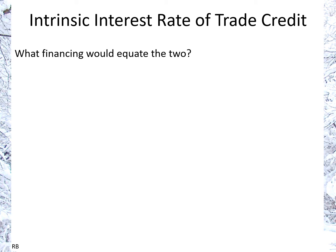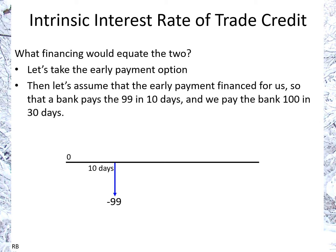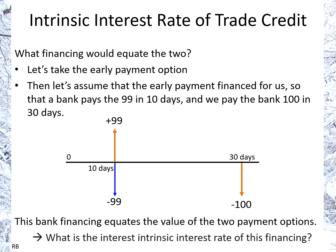Which financing would equate the two options in terms of value? Taking the early payment option of 99 in 10 days: imagine the bank is financing us — the bank pays us 99 in 10 days, and then we pay the bank back in 30 days. The question is whether the bank would finance us for less than the intrinsic rate involved. So what is the intrinsic rate in that financing, and can we get cheaper financing than that inherent in the 99 in 10 days versus 100 in 30 days?